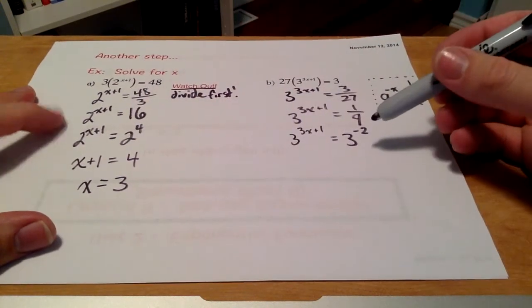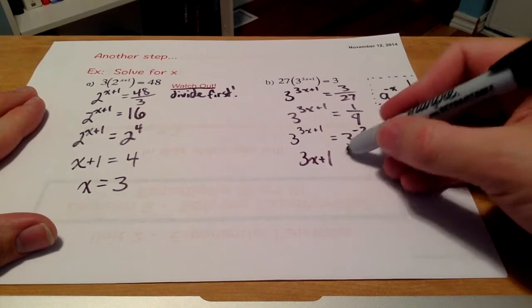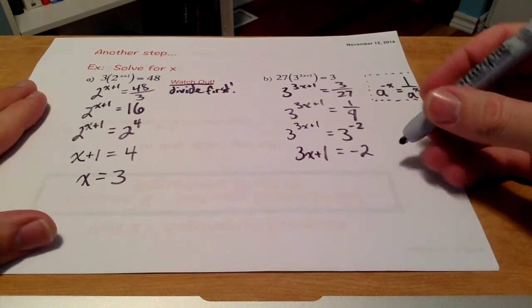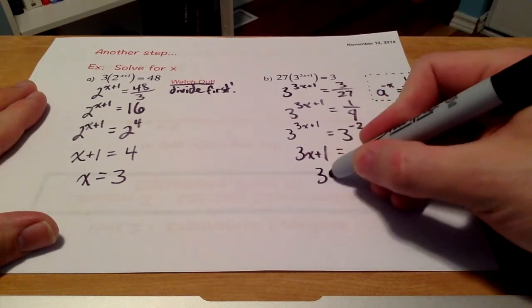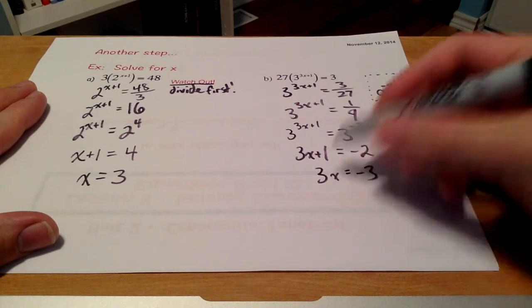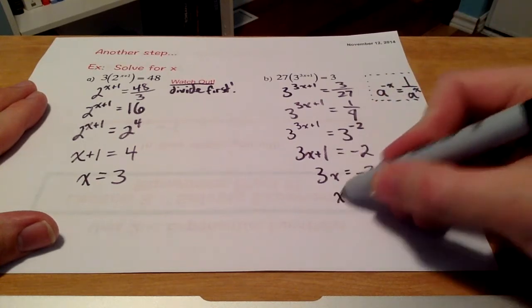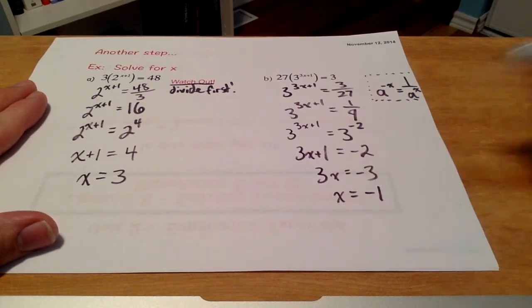And at this point, I'm at the same spot as in my other example where I can just focus on my exponents here. So I can solve for x. Just by moving 1 over to the other side, dividing both sides by 3 to get negative 1 here.